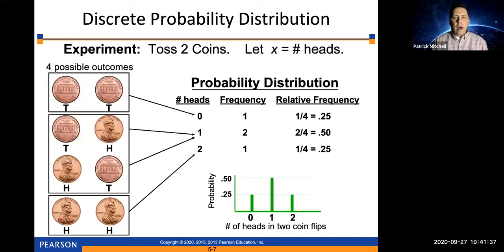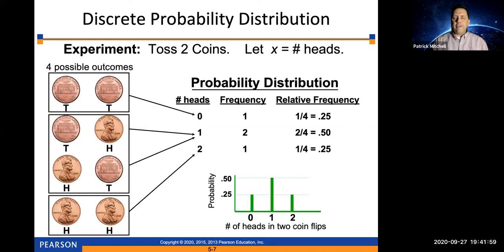There are two outcomes that give you one head — TH and also HT. Since those account for two outcomes out of four, that probability is two fourths, which is 0.5. The probability of the outcome HH, which is the only way of getting two heads, is one fourth or 0.25. This is a nice simple discrete random variable, and here is the probability histogram for that random variable.